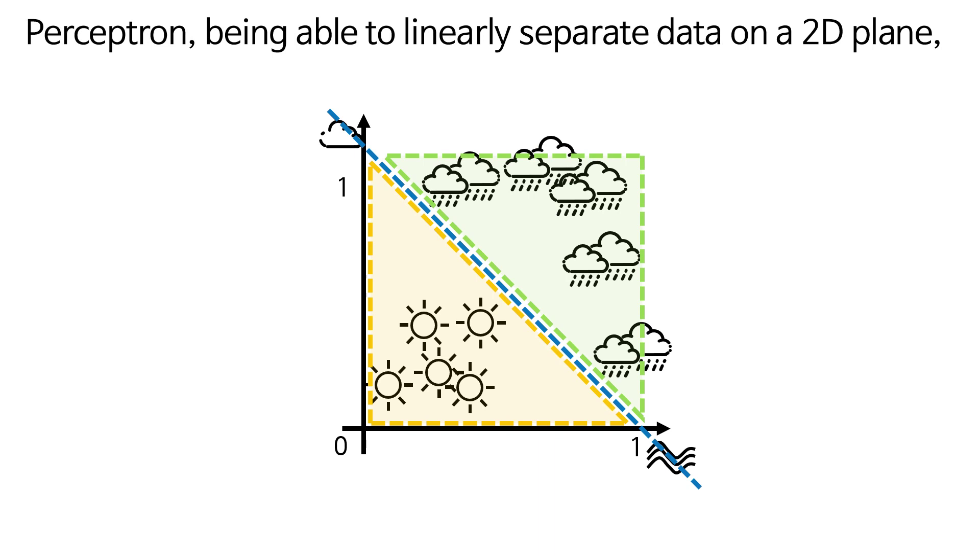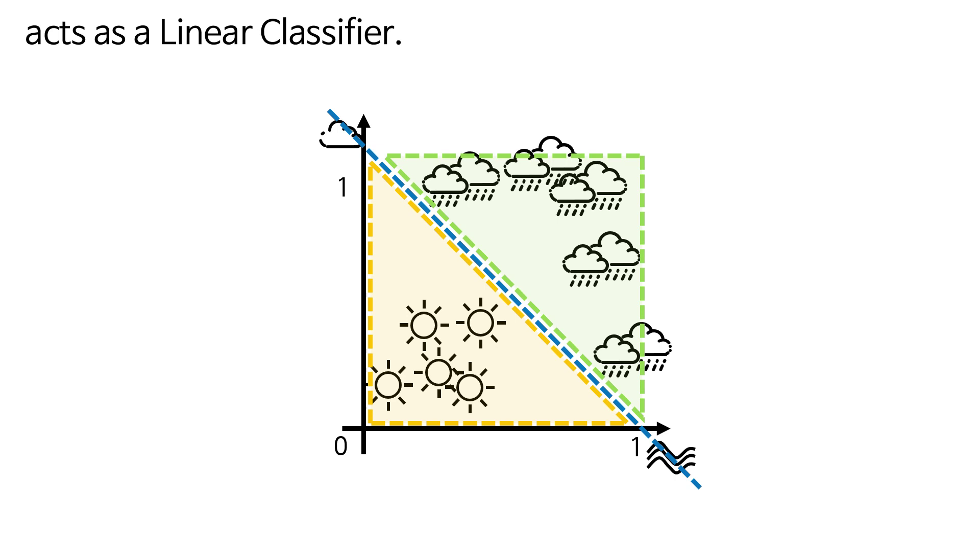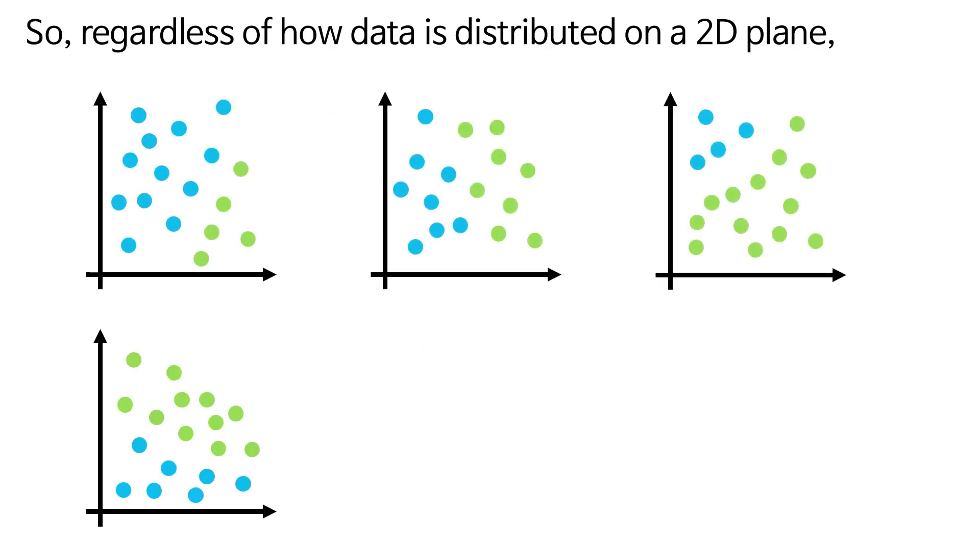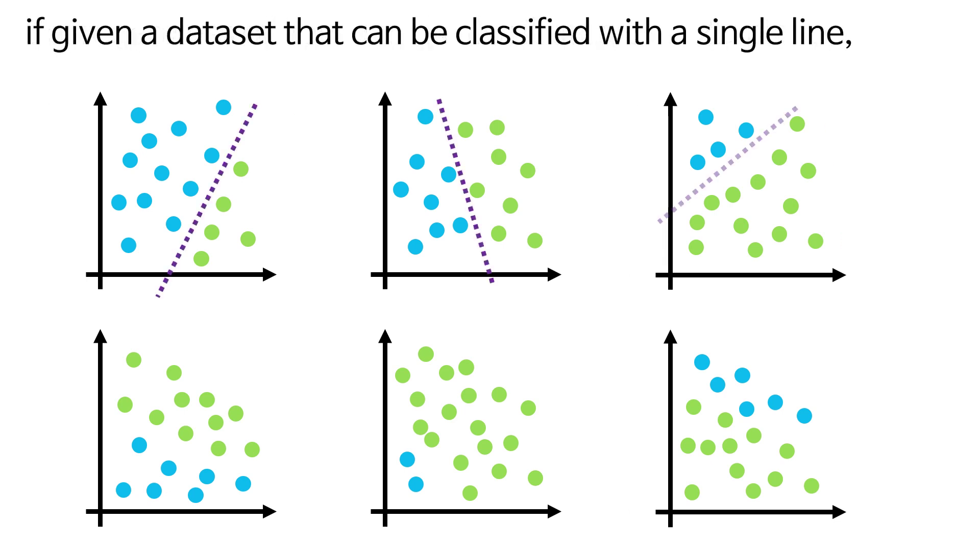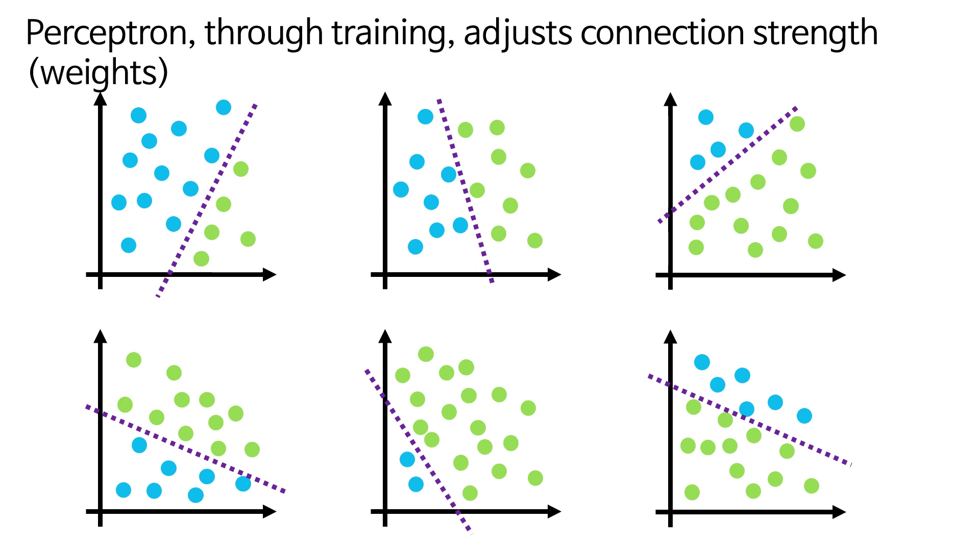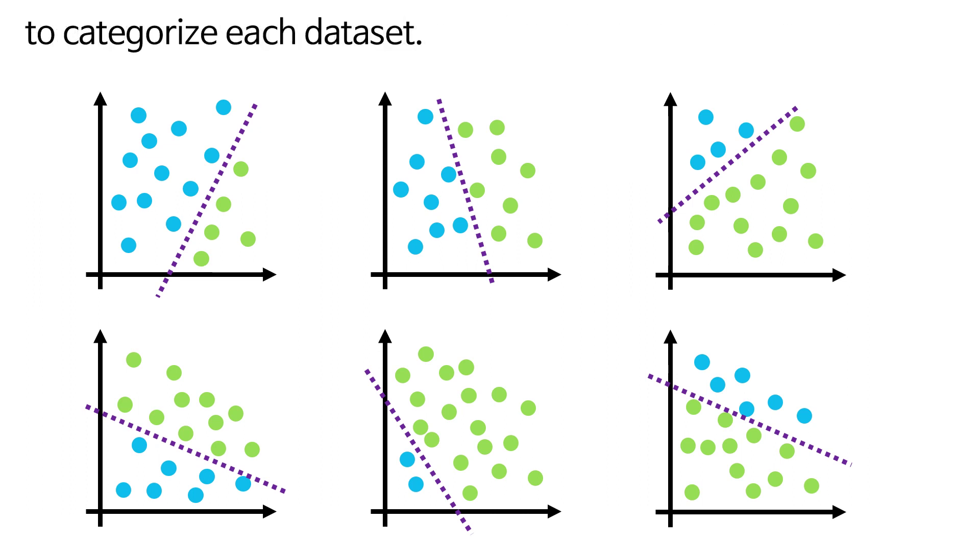Perceptron, being able to linearly separate data on a 2D plane, acts as a linear classifier. So regardless of how data is distributed on a 2D plane, if given a dataset that can be classified with a single line, Perceptron through training adjusts connection strength weights to categorize each dataset.